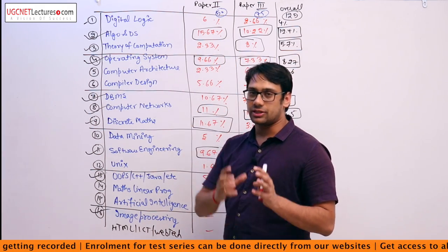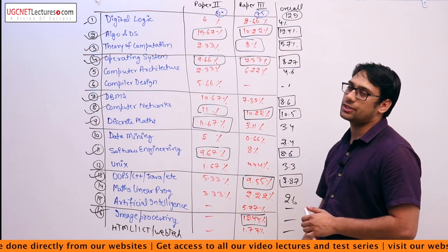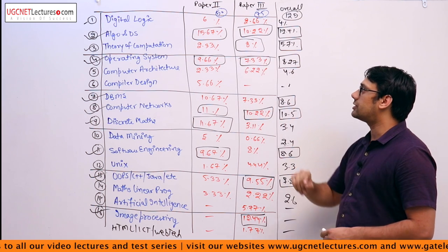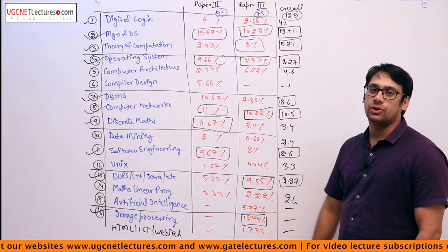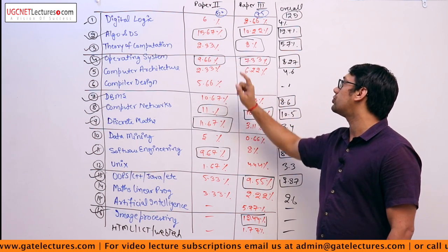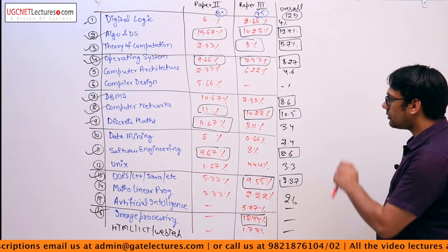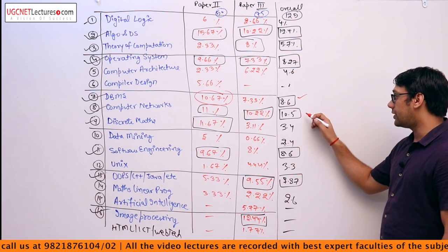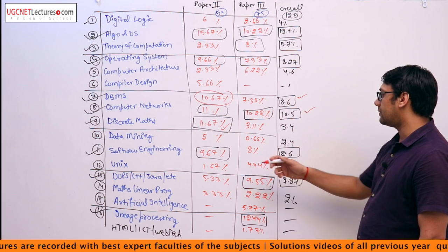Programming, data structures, and algorithms are a package of 3 subjects which you are always going to read together, so they are very, very important. Theory of computation has 8% questions in Paper 3 of UGC NET examination, so you cannot leave it. Operating system is again very, very important — it is 8.27% overall, very similar in Paper 2 and Paper 3. For database management system, it is 10.67% but overall 8.6%, which is again a very, very important subject. Discrete mathematics is also very important at 11.67%, and software engineering is also very important with not much difference between Paper 2 and Paper 3.